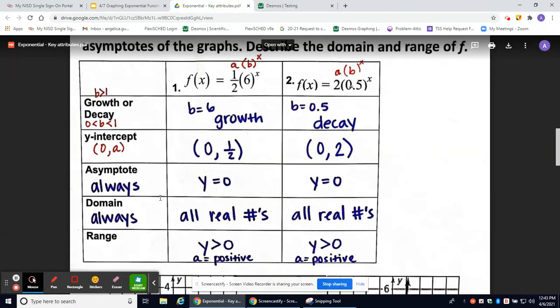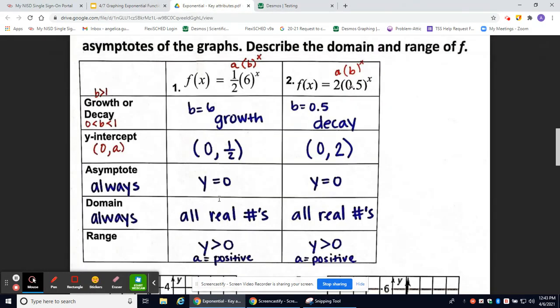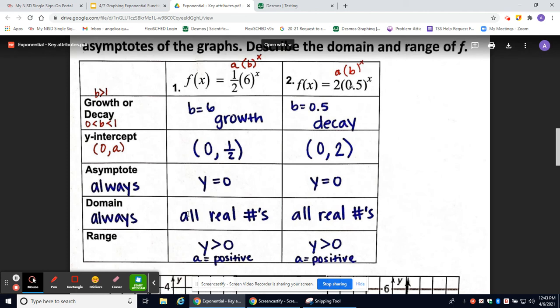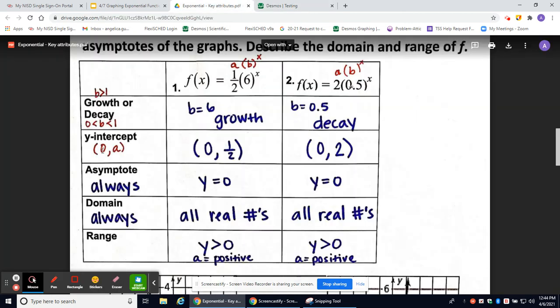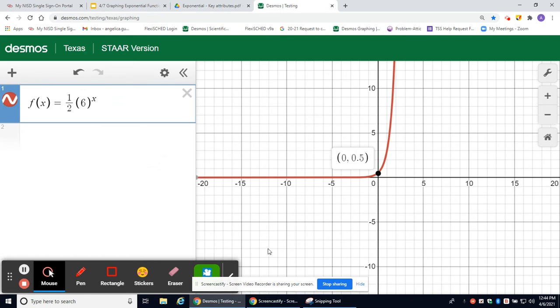That's all the key attributes we've talked about. It's always y = 0 for your asymptote. Your domain is all real numbers because it goes on in both directions. Your y-intercept can be found by looking at the graph as well. If you have any questions about graphing, please contact your teacher.